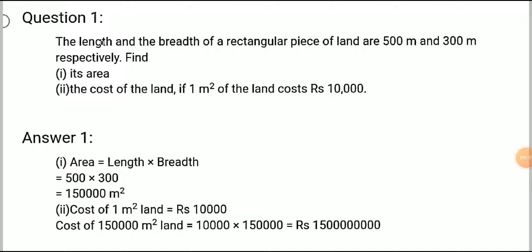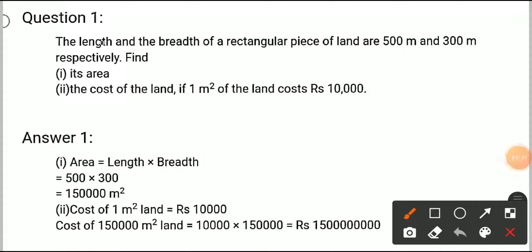Today I'm going to start Exercise 11.1, Chapter: Perimeter and Area. In question number one, it is given that the length and breadth of a rectangular piece of land are 500 meters and 300 meters respectively. Find its area, and second, the cost of the land if one meter square of the land costs rupees 10,000.